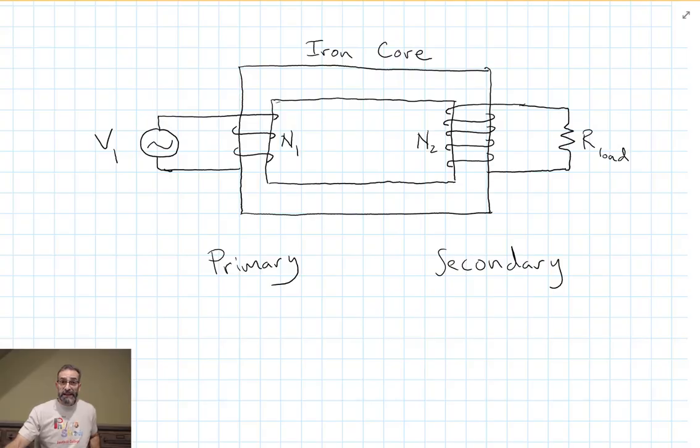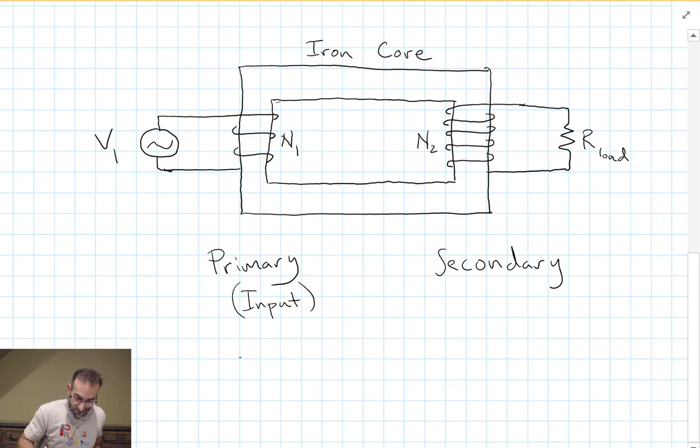This is a simple schematic of a transformer. It consists of an iron core. One side, we wrap a coil around the iron core. And on the other side, we wrap a coil around the iron core. But because there are a different number of turns, we can get some interesting effects. The primary is our input side. So we're inputting a voltage V1. And there are a certain number of turns on the primary coil. I'm going to call that N1.